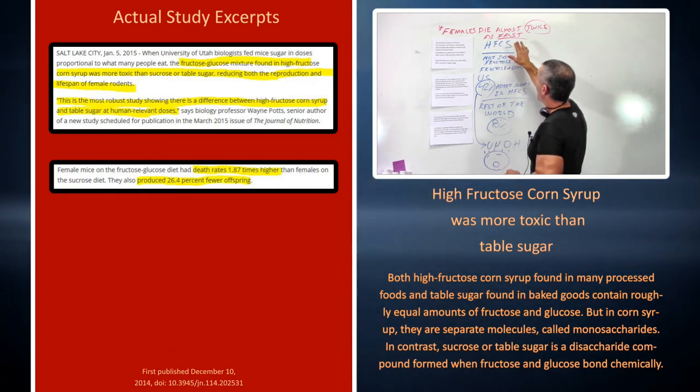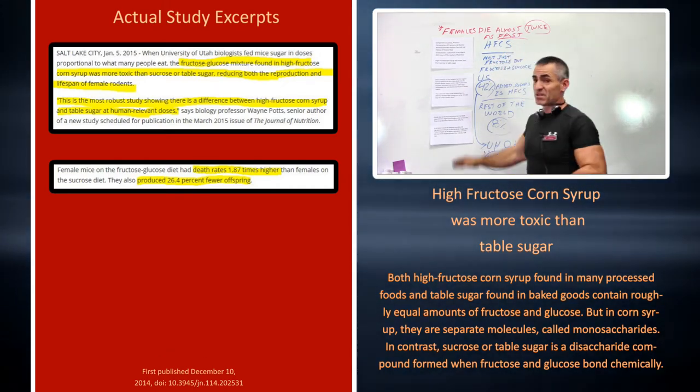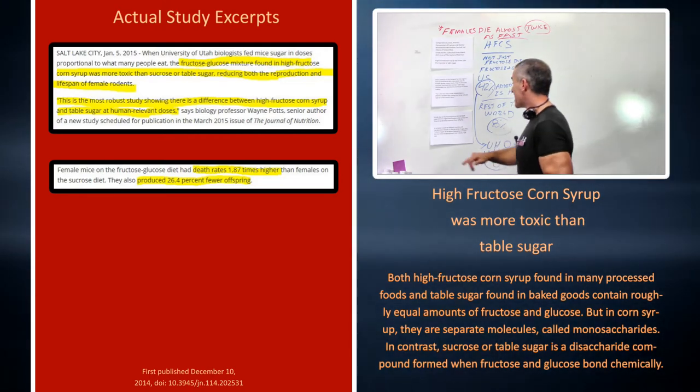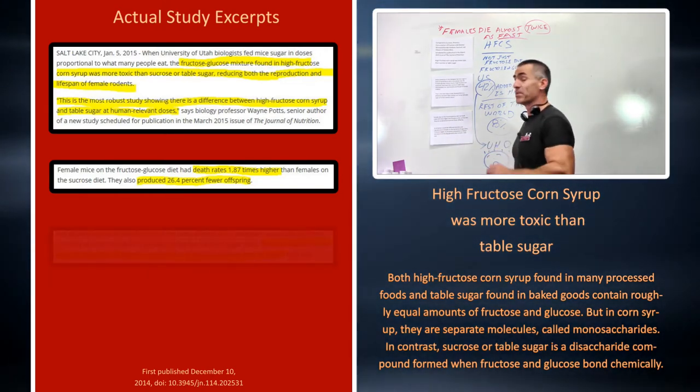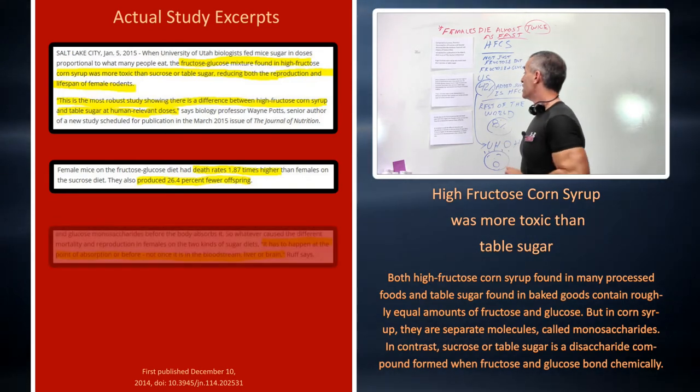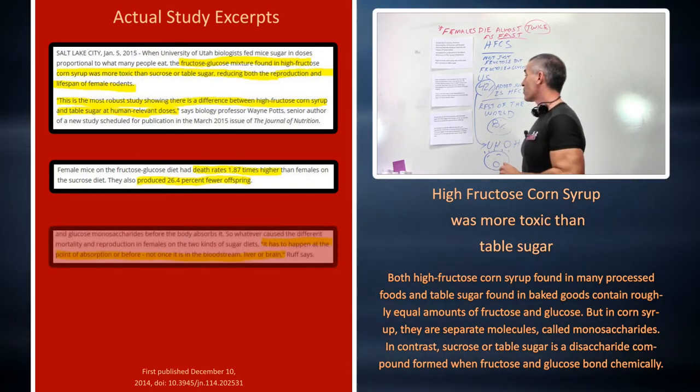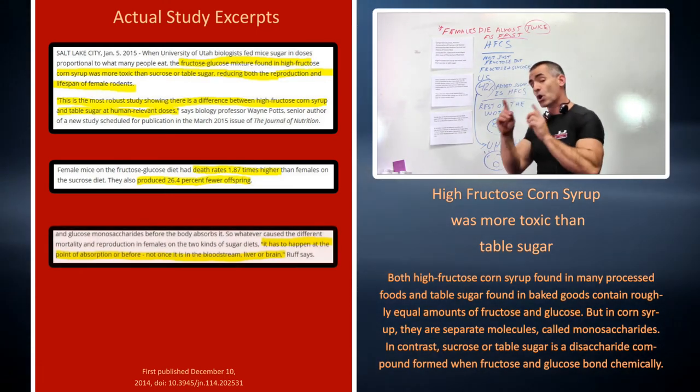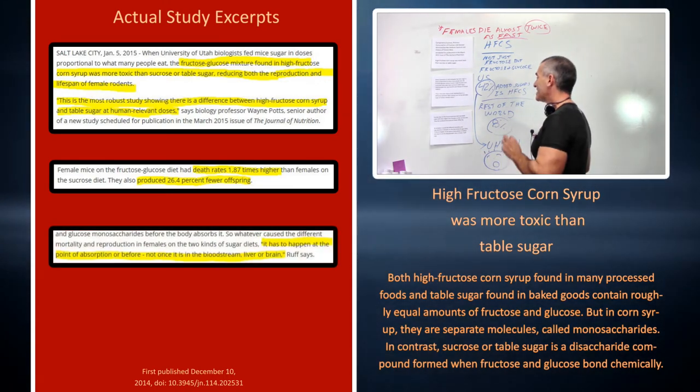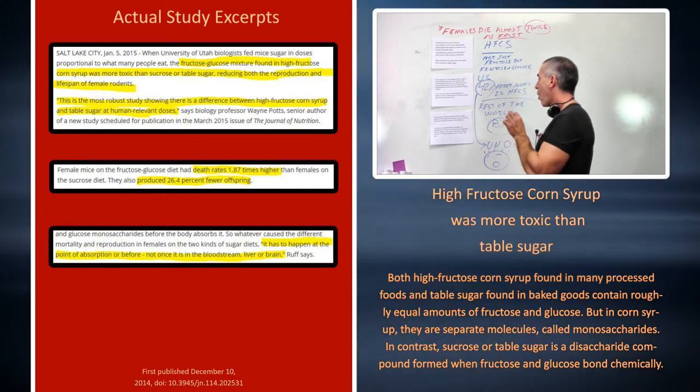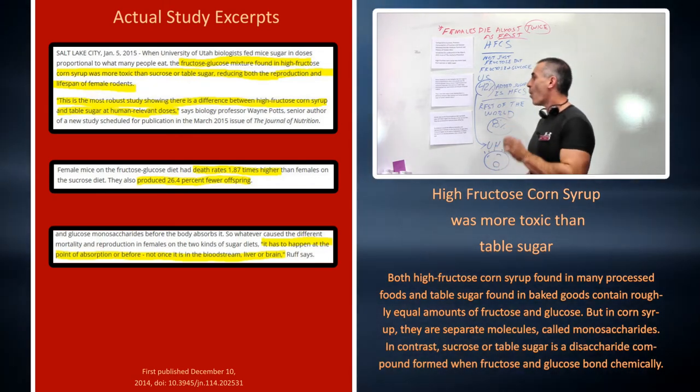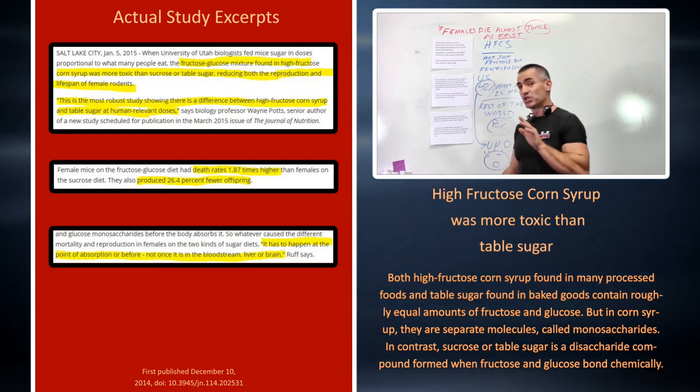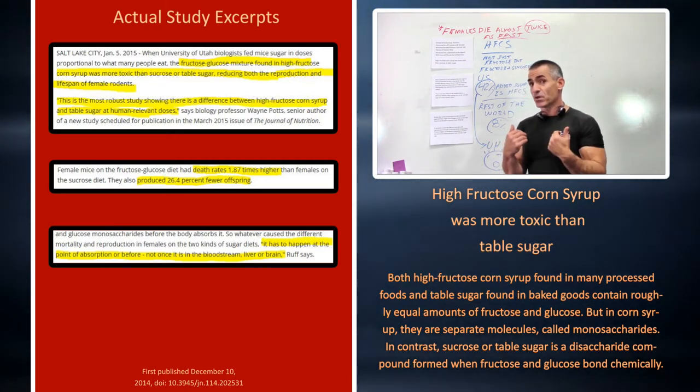They found out that the high fructose corn syrup combination does its damage not once it's in the bloodstream or absorbed. As the researchers said, whatever caused a different mortality and reproduction in females on the two kinds of sugar diets, it has to happen at the point of absorption or before, not once it's in the bloodstream, liver, or brain.